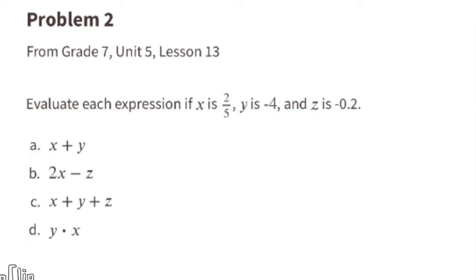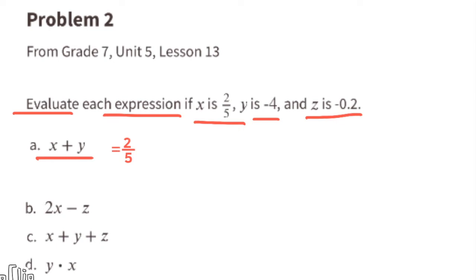Problem 2 from Unit 5 Lesson 13: evaluate each expression if x is 2/5, y is negative 4, and z is negative 2 tenths, or negative 0.2. Part a: x plus y. Substituting, the value for x is 2/5 and the value for y is negative 4, so this equals 2/5 plus negative 4.